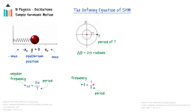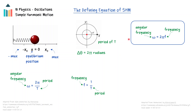Because the frequency is the inverse of the period, the angular frequency can be written in terms of the frequency of the motion. The angular frequency omega is equal to 2 pi times the frequency. The angular frequency is also known as the angular velocity and has the units of radians per second. The angular frequency of a system undergoing simple harmonic motion is determined by physical properties of the system.